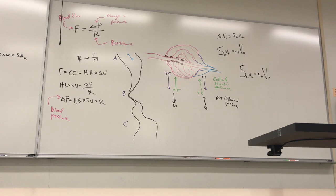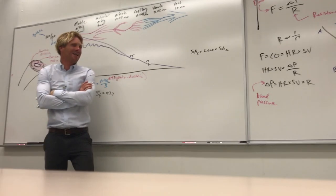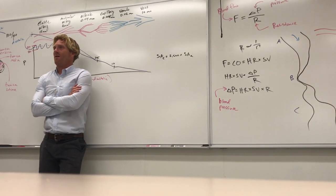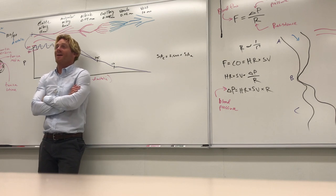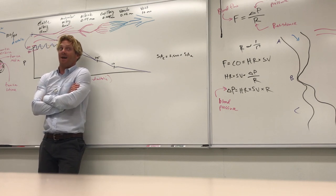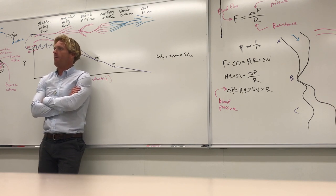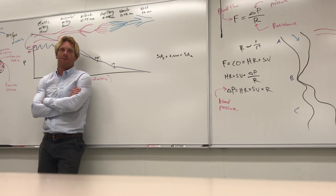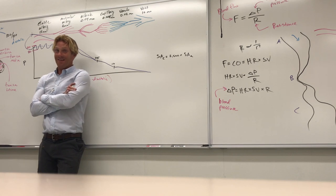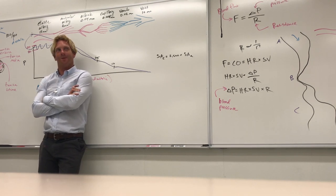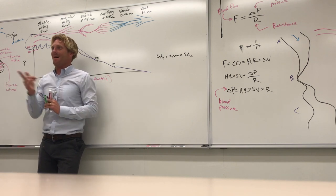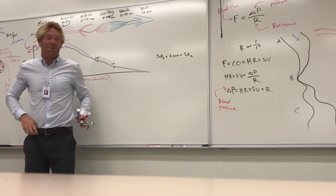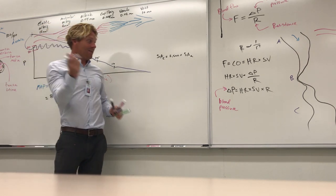By the time we leave the capillary beds, pressure is down to 17 mmHg — not enough to get blood back to the heart, especially from somewhere like the big toe. The heart is essentially useless for the return trip. Several mechanisms collectively called the venous pump are responsible for getting blood back. The first mechanism involves one-way valves in our veins.